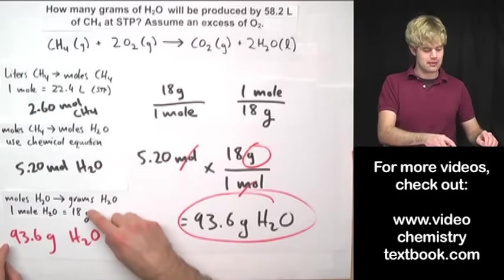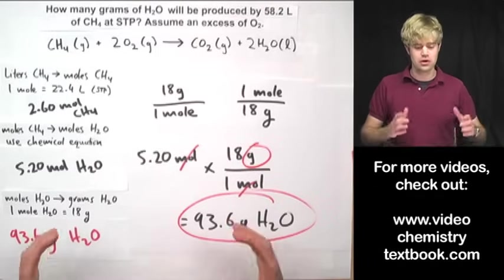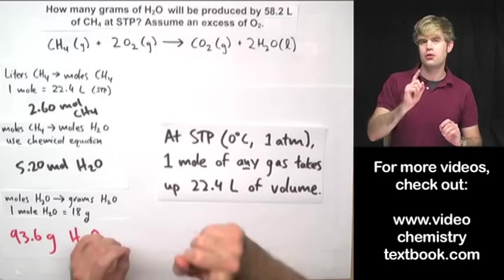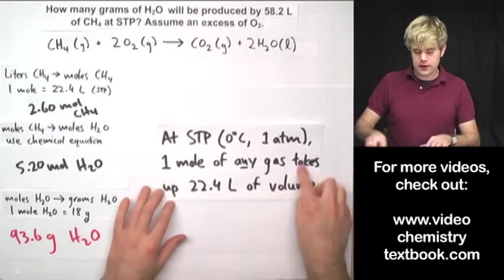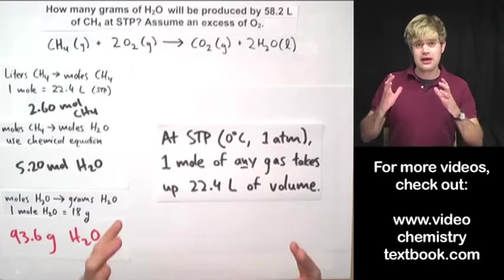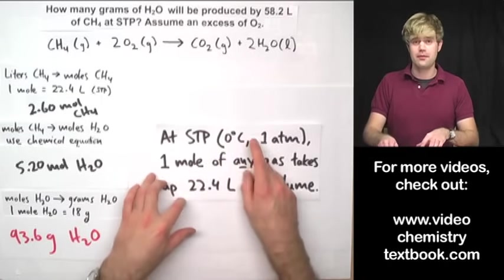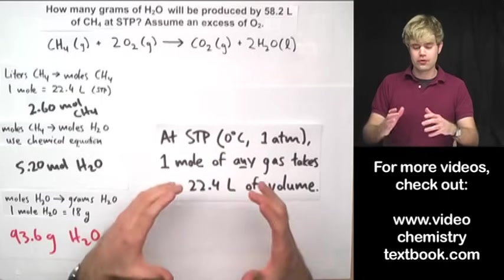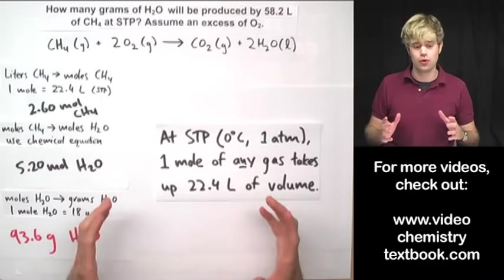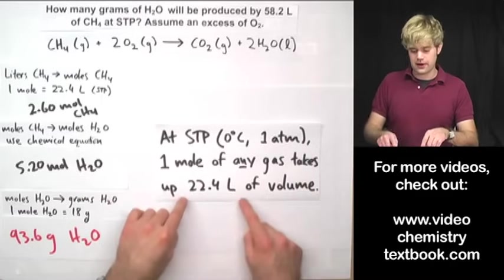Then I got the answer for that and finally I took the moles of H2O and I used the molar mass 18 grams per one mole to find out the mass in grams of water that I'd end up with at the end. One thing that's really important to keep in mind is that you can only use this rule, one mole of gas taking up 22.4 liters of volume, if the conditions are STP, which is 0 degrees Celsius and 1 atm. If the temperature or pressure or both are different, you can't use this 22.4 liter rule and you'll have to use the ideal gas law to calculate the amount of space that the gas would take up.